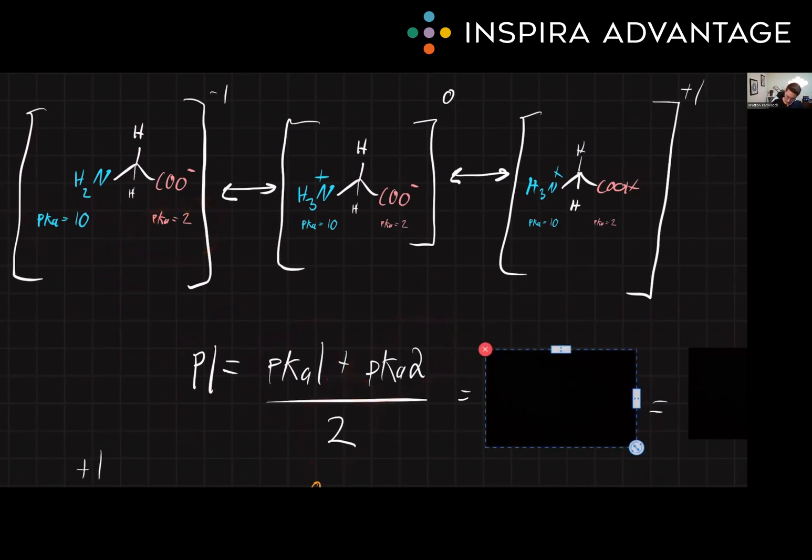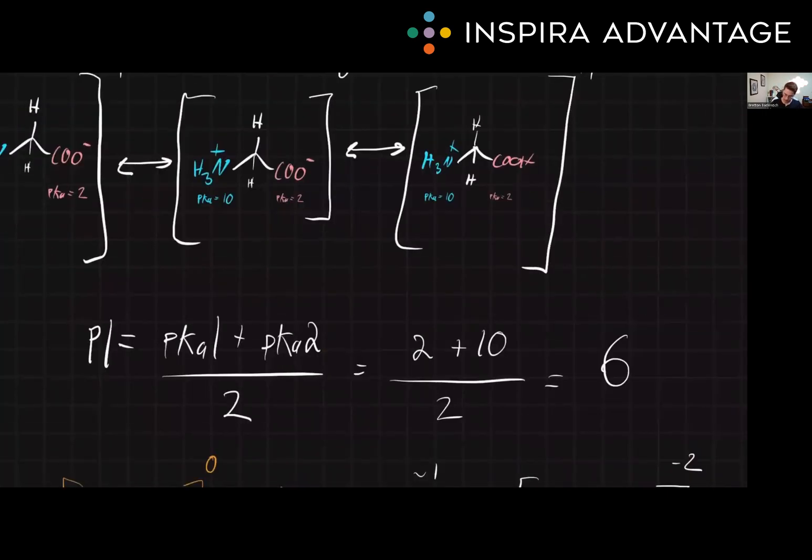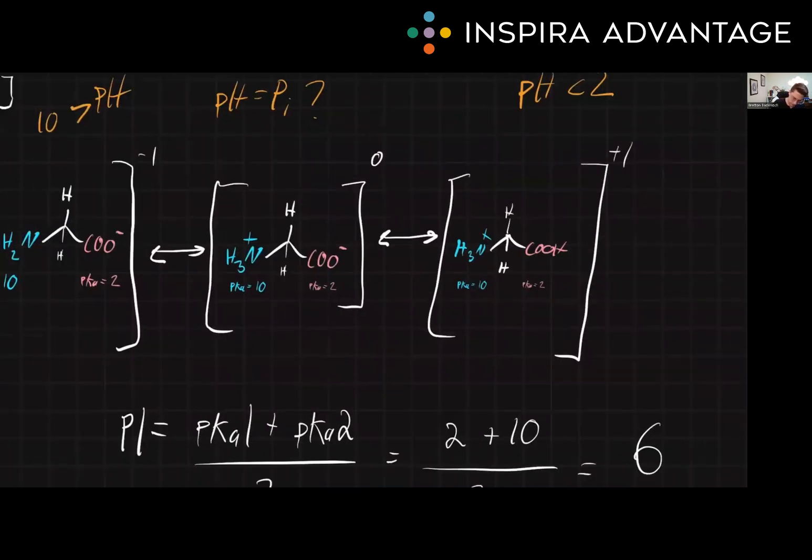So if we do this math, we'll see that 2 plus 10 over 2, so 12 over 2 equals 6. So the pI is 6. This is the pH at which we will have majority net charge of zero of glycine.